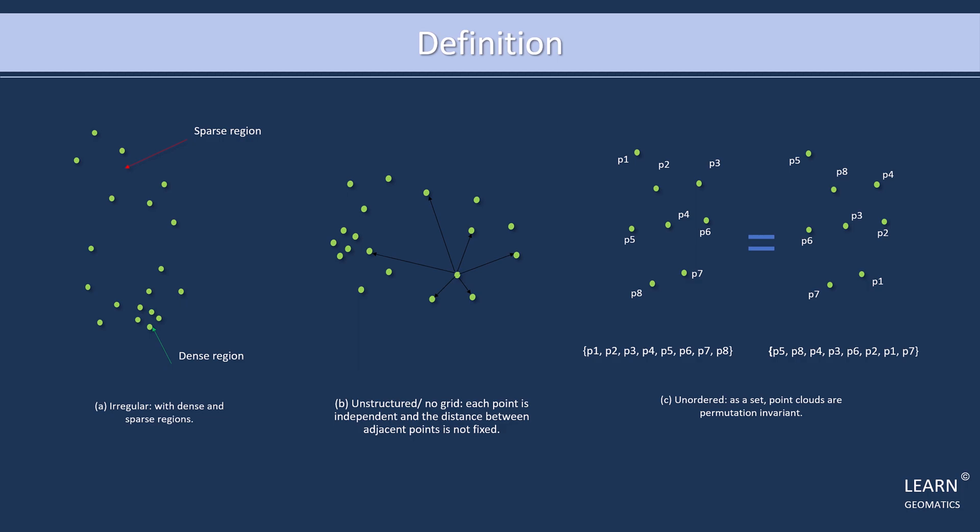Firstly, they are irregular, meaning that they have dense and sparse regions. For example, if you were to scan a forest, the point cloud would have dense points where there are many trees and sparse regions where there are fewer trees or open spaces.